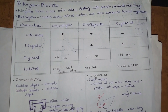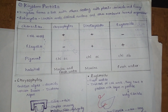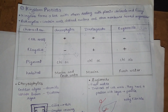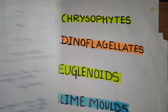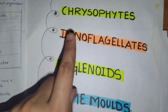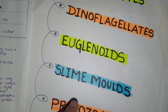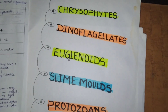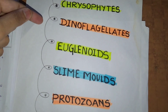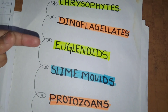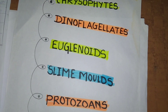In Kingdom Protista, what is included? The members in Kingdom Protista include Chrysophytes, Dinoflagellates, Euglenoids, Slime Moulds, and Protozoans.